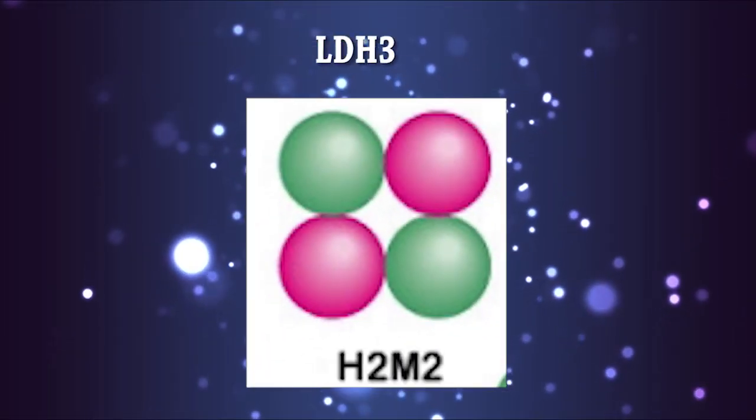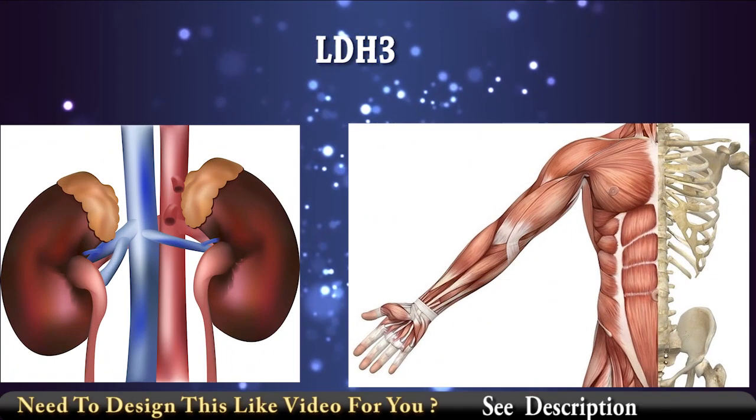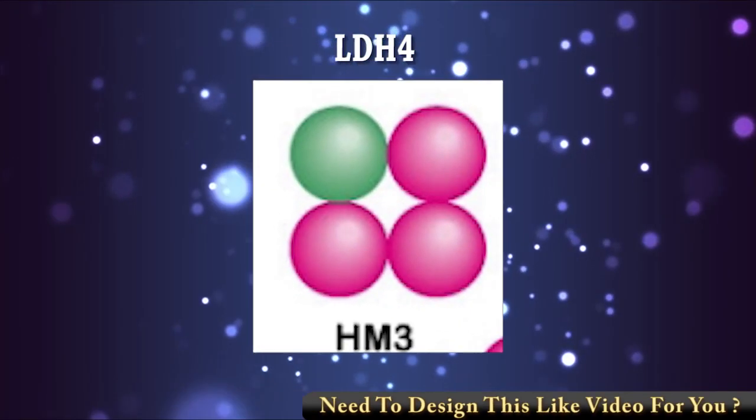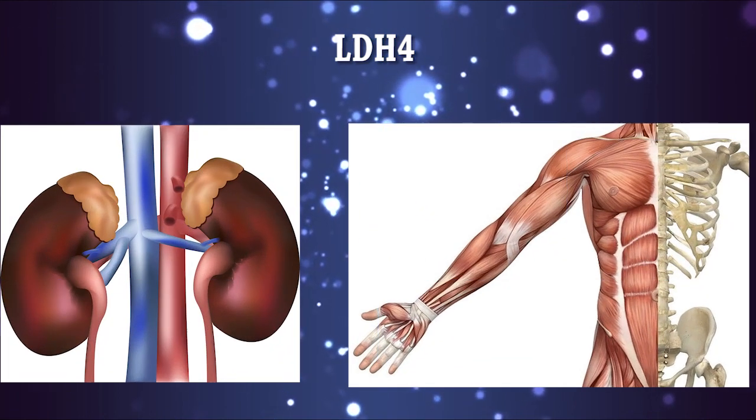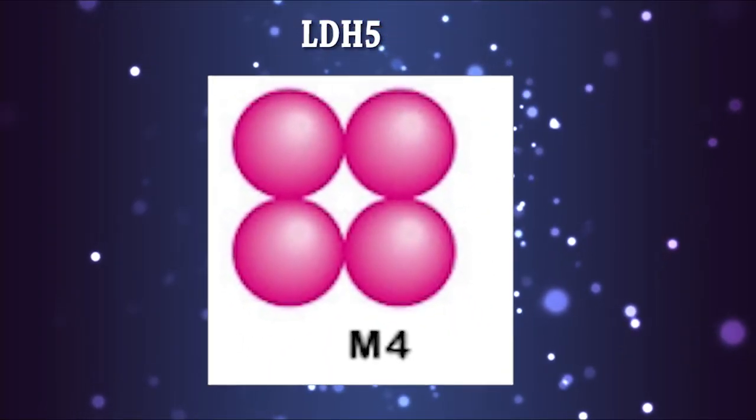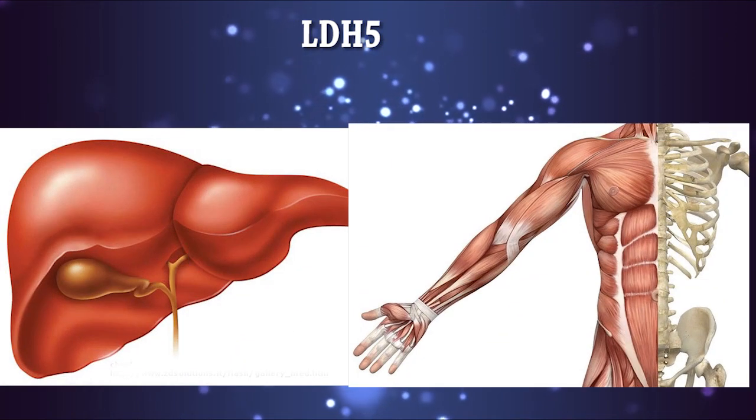LDH 3 composition is 2 H chains and 2 M chains, present in kidney and skeletal muscles. LDH 4 composition is 1 H chain and 3 M chains, present in kidney and skeletal muscles. LDH 5 composition is 4 M chains, present in liver and skeletal muscles, also elevated in liver and skeletal muscle diseases.